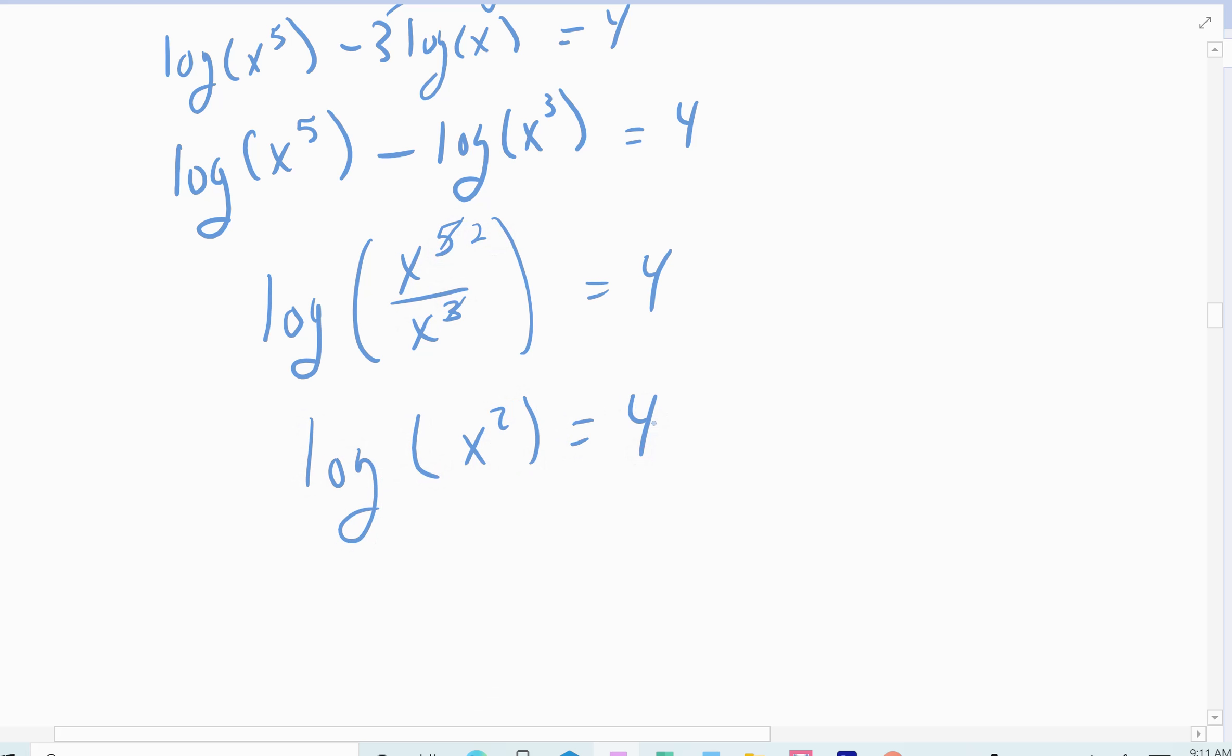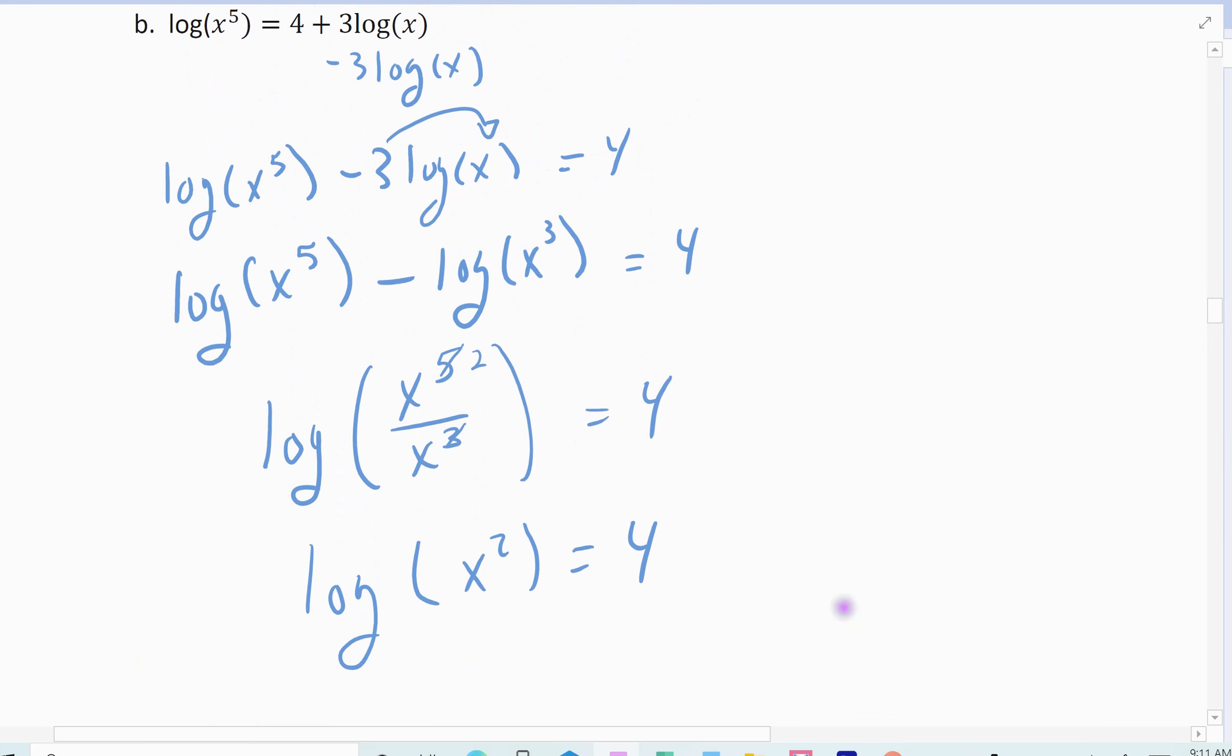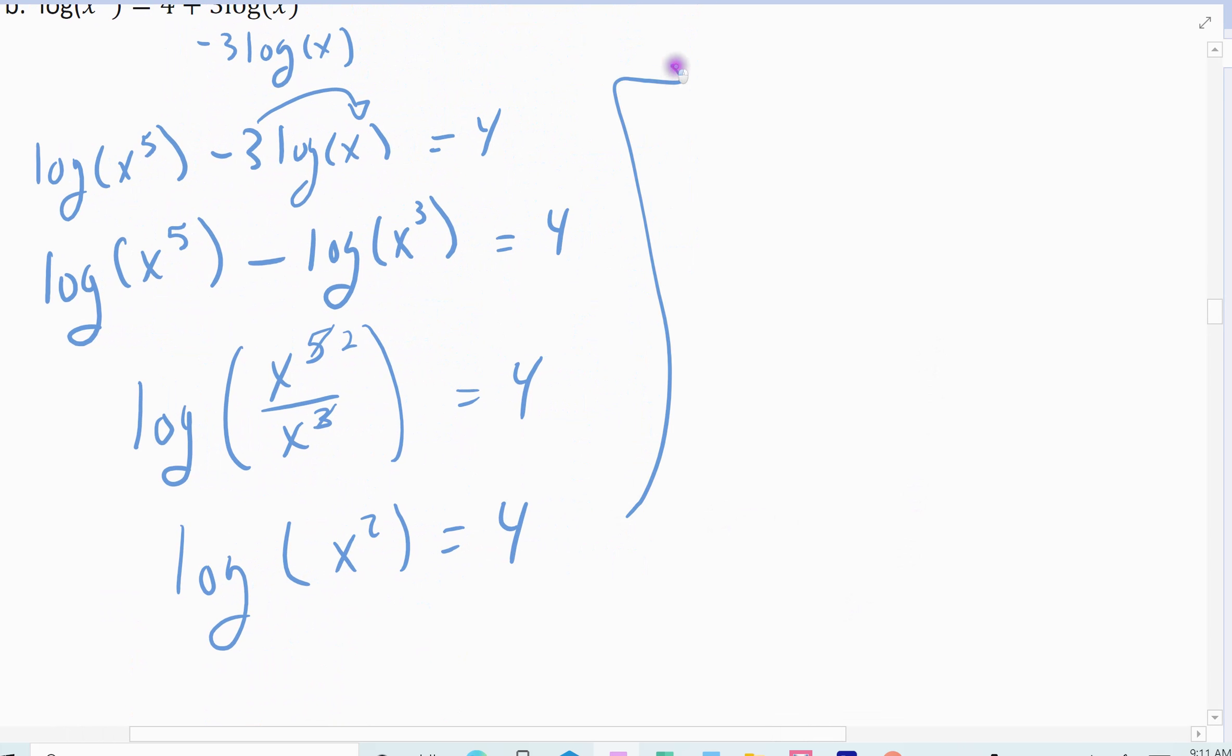Alright, now I've got a single logarithm set equal to a single constant term. But now I use, it's up to you. Base 10. So I like to get rid of it by taking it raised to. So I'm actually going to move over here. And so I'm going to take 10 raised to the log of x squared equals 10 raised to the 4th. Those two things undo each other, leave me with x squared, 10 to the 4th.